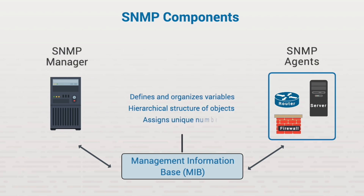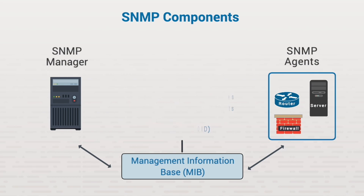Each variable in the MIB has a unique number assigned to it, called the OID. SNMP operates at the application layer in the OSI model, and it runs on ports 161 and 162.